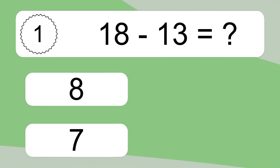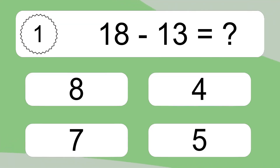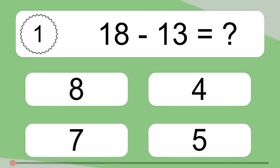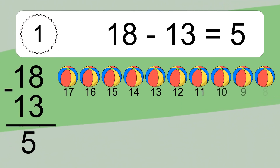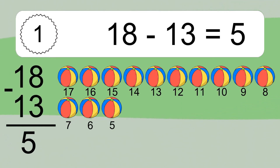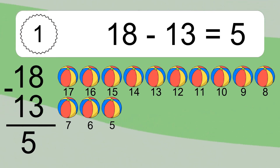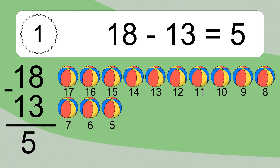18 minus 13 equals what? 18 minus 13 equals 5. Let's count it: 17, 16, 15, 14, 13, 12, 11, 10, 9, 8, 7, 6, 5.